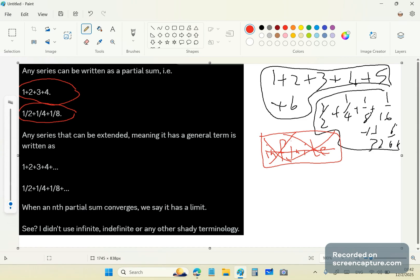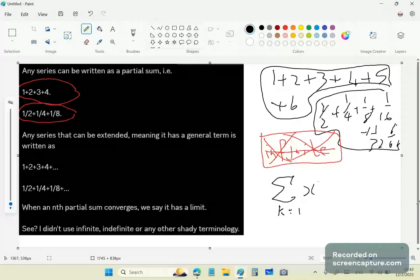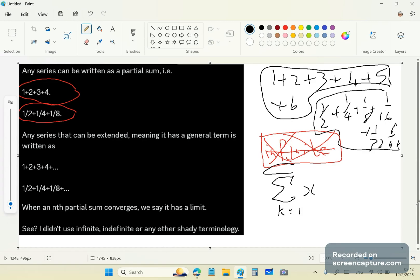Now, when you write the sigma sign like that, you can say from k equals 1, x. You don't have to put anything up there if you're not looking at any particular partial sum. So if you're looking at a partial sum, you'll say, let's say, to 8. And this means 1 plus 2 plus dot, dot, dot to 8. Otherwise, you just leave this top index out.